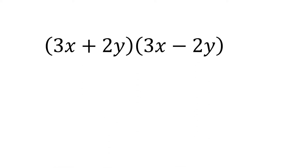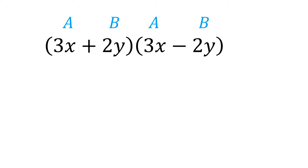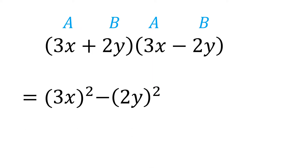In this case, we have a as 3x and b as 2y. Now instead of using the FOIL method, just take the square of 3x, then subtract the square of 2y,